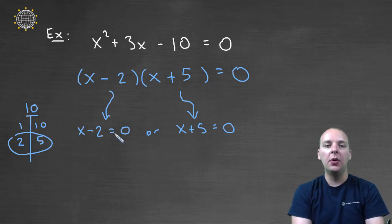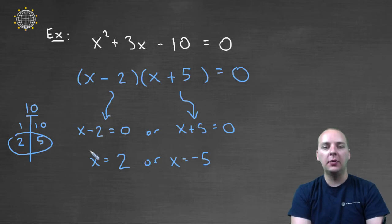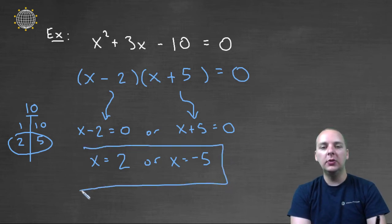as we said earlier, one of these guys has to be zero. So either x is equal to positive two, if you add two to the right, or x would be equal to negative five, if you subtract five to the right. So here's your two solutions to this quadratic equation.